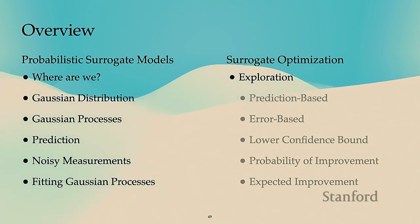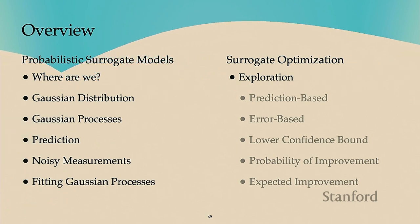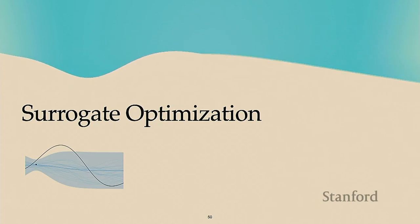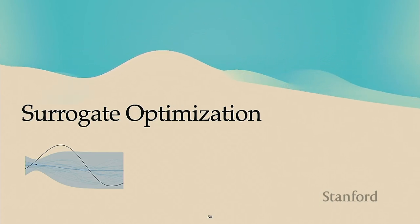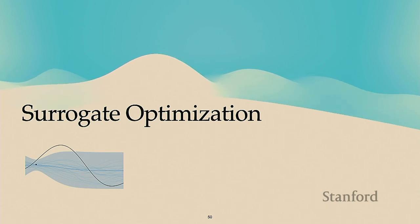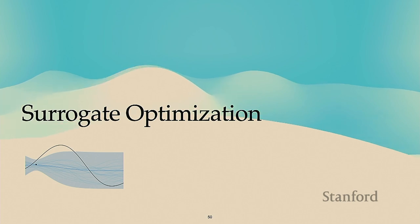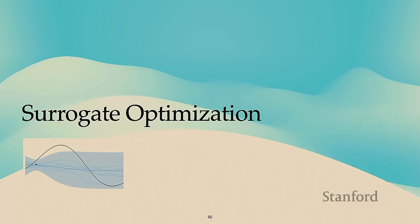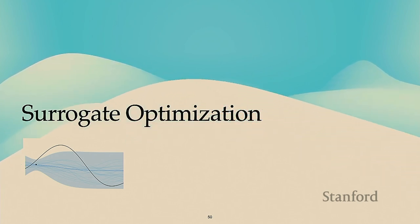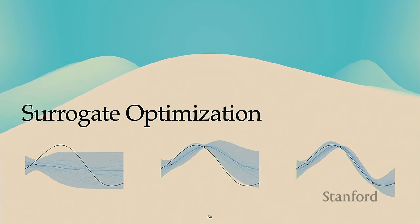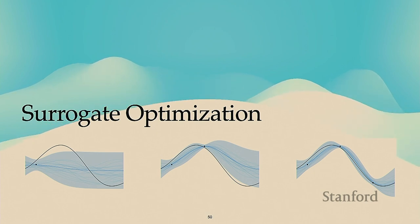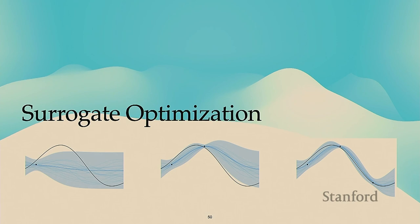We're now going to transition from how to model with a Gaussian process to how to sample — that is, selecting sample points to get function evaluations for optimization. We keep the high-level roadmap in mind: we start with few samples and choose sample locations to better learn the function. That's what surrogate optimization focuses on.